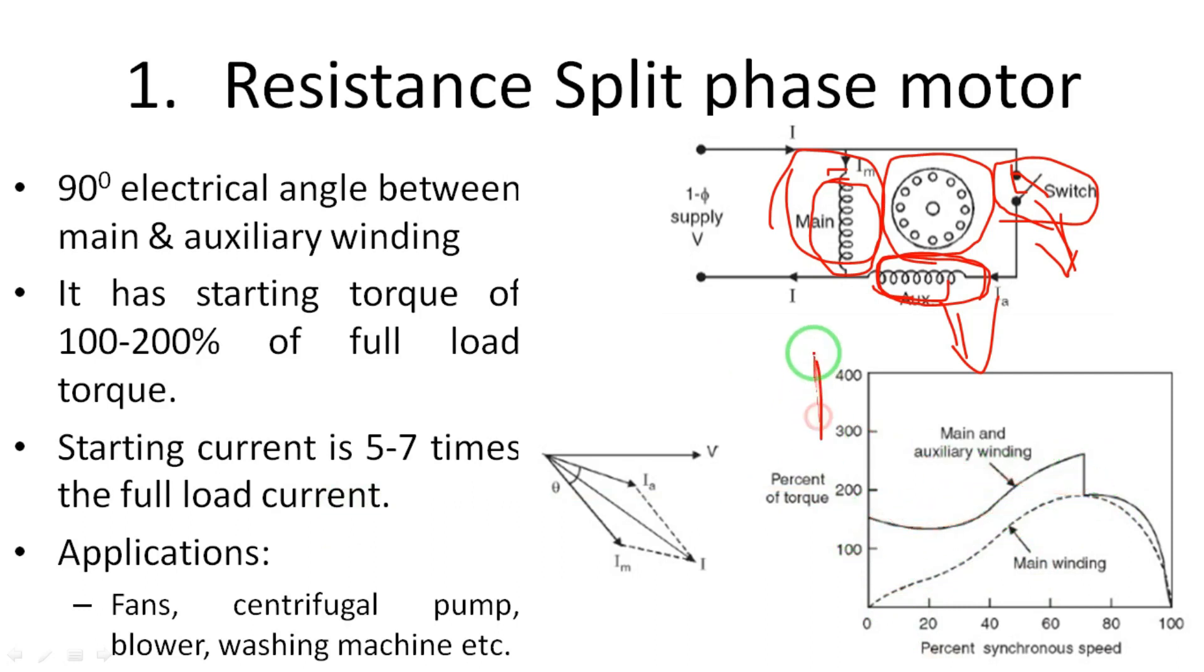Y-axis is torque, X-axis is speed. Without auxiliary winding, when speed is zero, torque is also zero. When the speed attains, the torque also increases slowly but it needs initial torque. When we include the auxiliary winding with the main winding, initially the speed is zero but the torque is 150 percent of full load torque. Initially there is high torque because of the auxiliary winding.